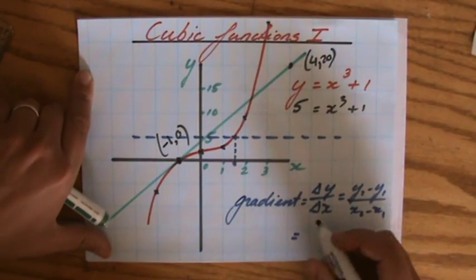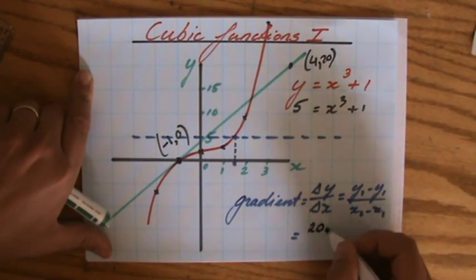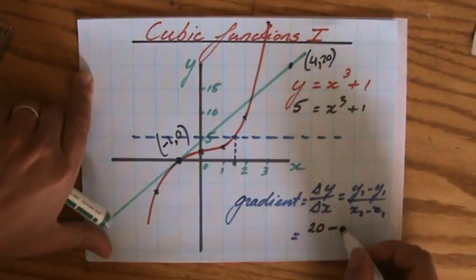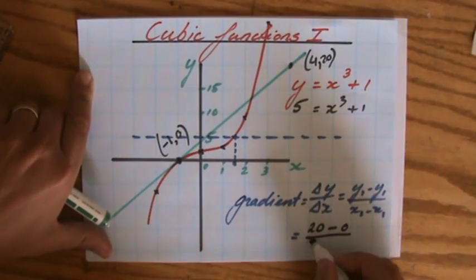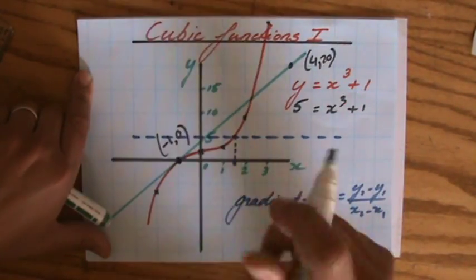So the gradient is going to be the difference in the y direction, 20 take away 0, over the difference in the x direction, 4 take away minus 1.